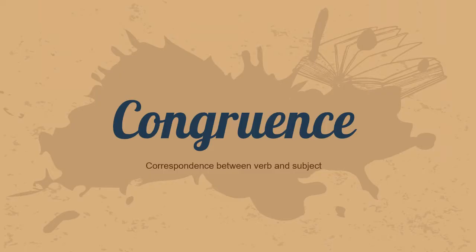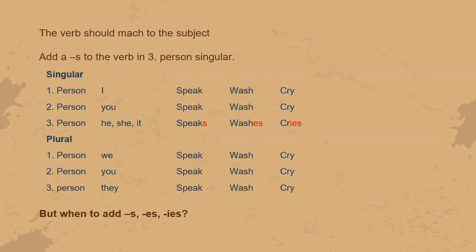I'm going to start with congruence, that is when you have to have a correspondence between verb and subject in a sentence. The verb should match the subject in the sentence, and to do so, you have to add an -s to the verb in third-person singular position. The other persons are all the same.